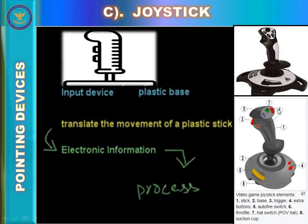There is also an extra button, an auto-fire switch, a throttle — the yellow strip — and a hat switch on the joystick.